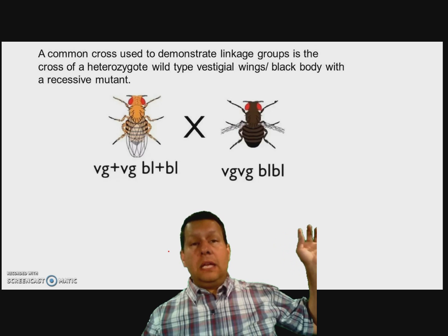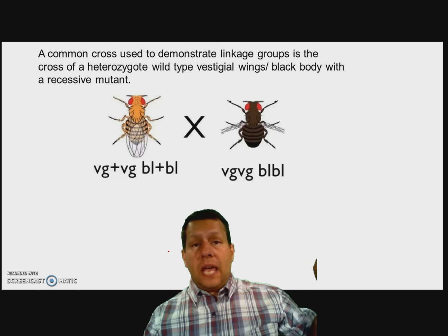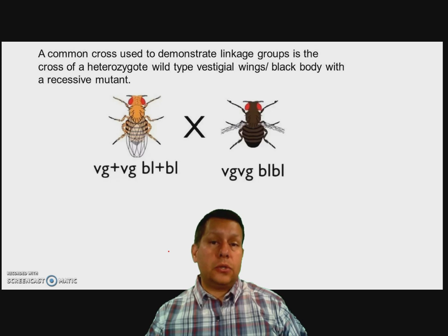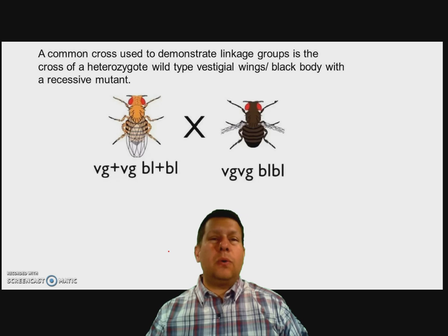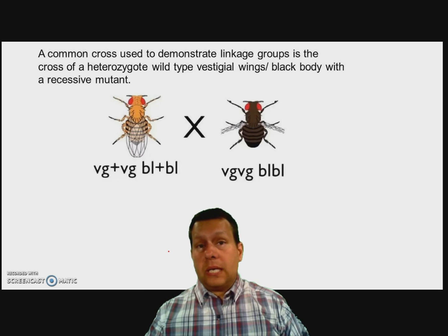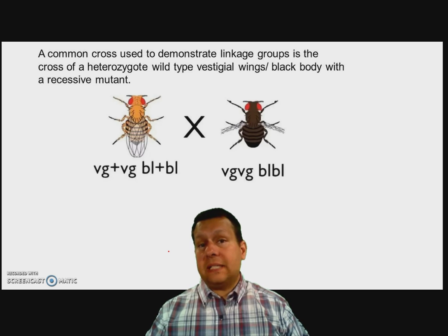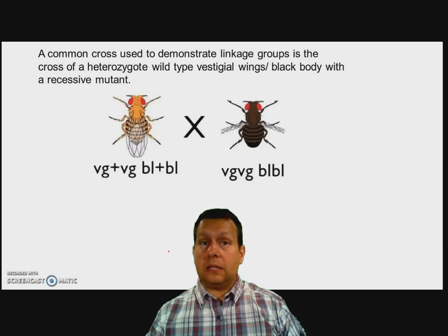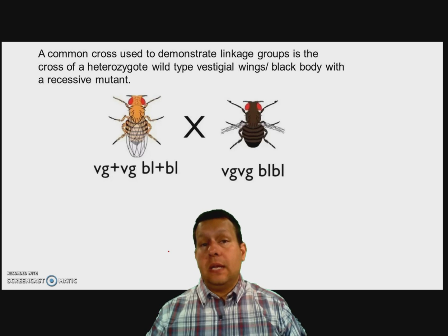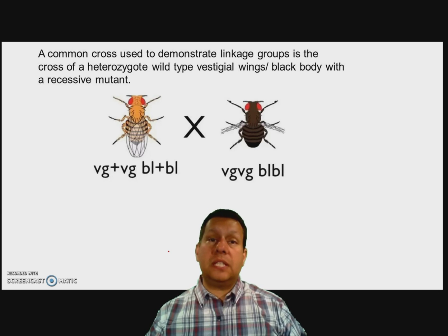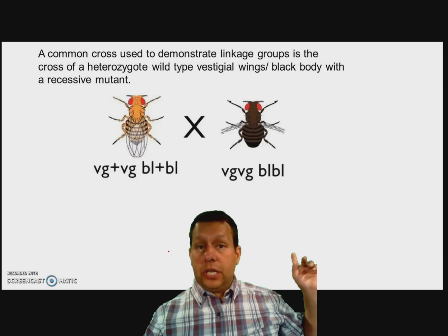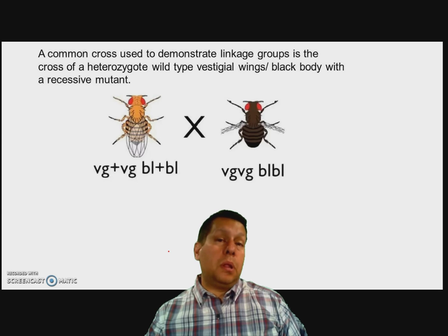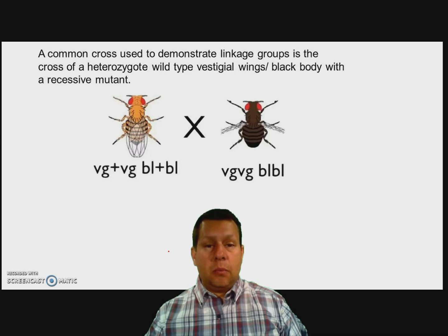When we look at the heterozygous condition, we see a yellow body for this fruit fly and we see the normal wing structure. How do we represent that dominant trait? What Thomas Hunt Morgan did is instead of saying a dominant trait, he used the term wild type. To represent that the trait was wild type or dominant, he puts a plus next to it. Because this is heterozygous, we see VG+ VG — that means it has normal wings. And it has BL+ BL, which means it has that yellow body.